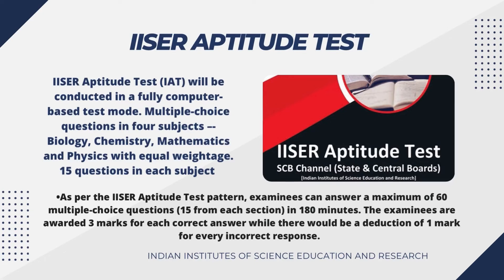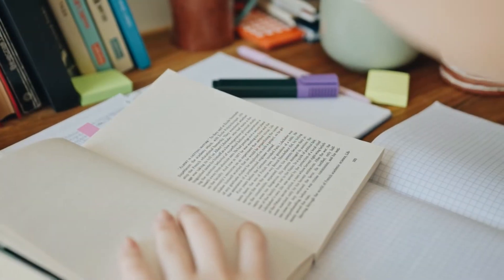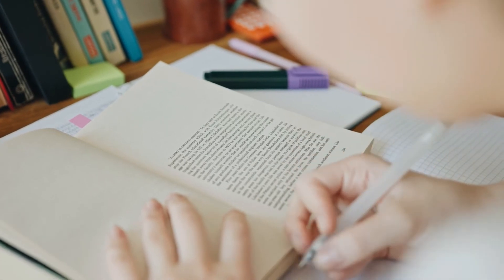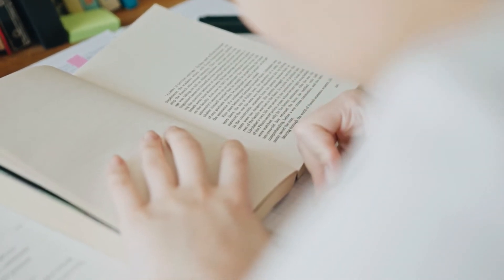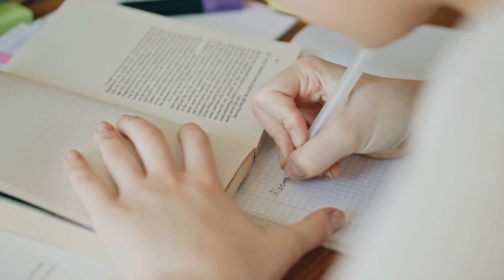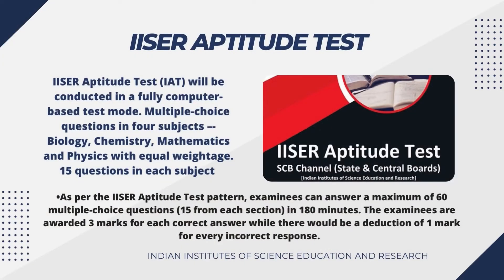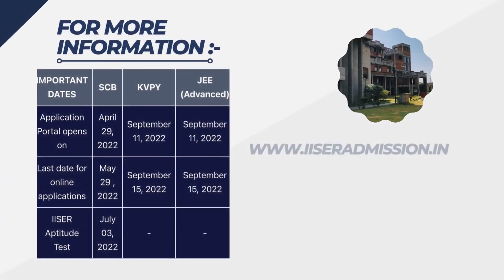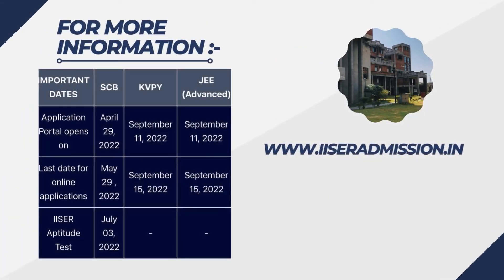The syllabus generally follows the NCERT syllabus of classes 11th and 12th across four subjects: Maths, Physics, Chemistry, and Biology. If you want to apply for this exam, the application portal opened from 29 April and you can apply till 29 May 2022. The exam will be conducted on 3rd July 2022.